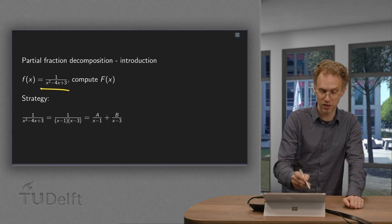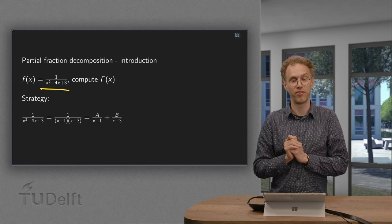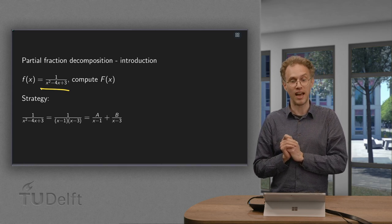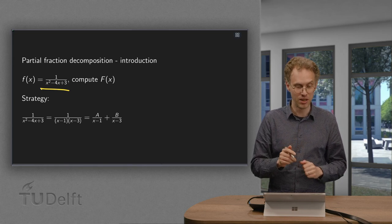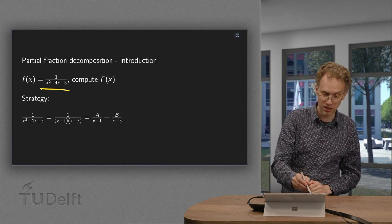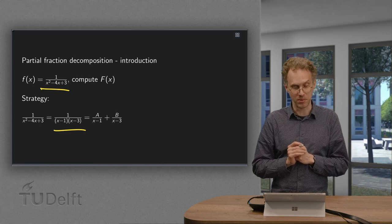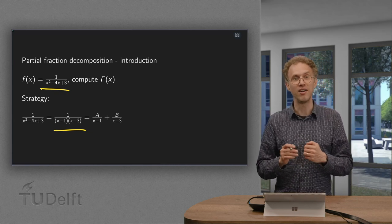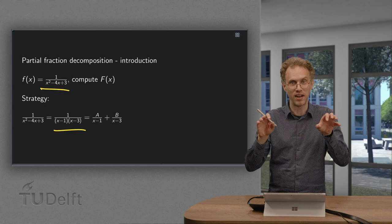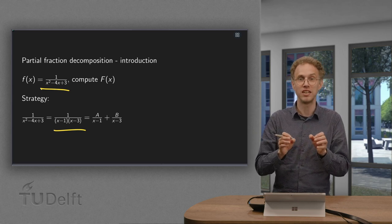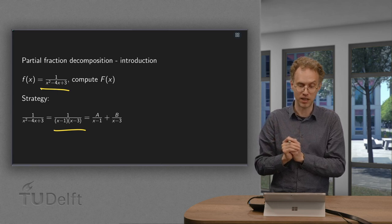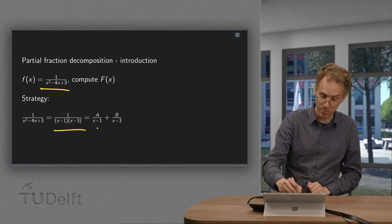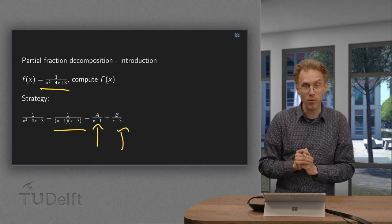Here we have a rational function 1 over x squared minus 4x plus 3 and we want to compute an antiderivative. What's the strategy? We can factorize the denominator as (x minus 1) times (x minus 3). Now the idea is that we can separate this, decompose it into something divided by (x minus 1) plus something else divided by (x minus 3). From these two terms we know the antiderivative.